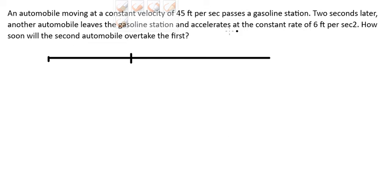Let's say we have a gas station that is this one. After two seconds, the first car is going at 45 feet per second. So after two seconds we have 45 multiplied by 2 seconds, so car A in here.